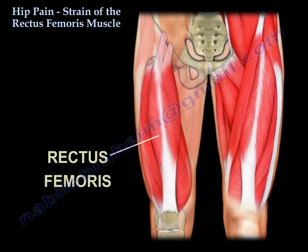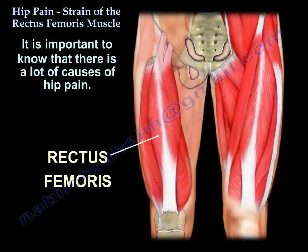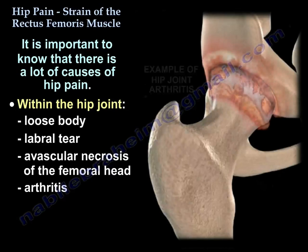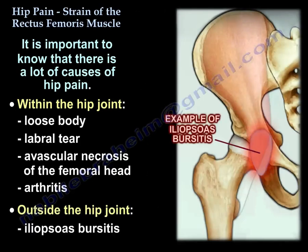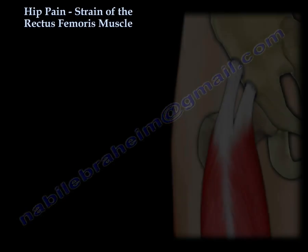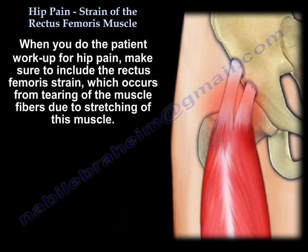Before discussing the anatomy of the rectus femoris muscle, note that there are many causes of hip pain, especially anterior hip pain. These can be something inside the joint — like a loose body, labral tear, avascular necrosis of the femoral head, or arthritis — or outside the joint, like iliopsoas bursitis. When working up a patient for hip pain, make sure to include rectus femoris strain.